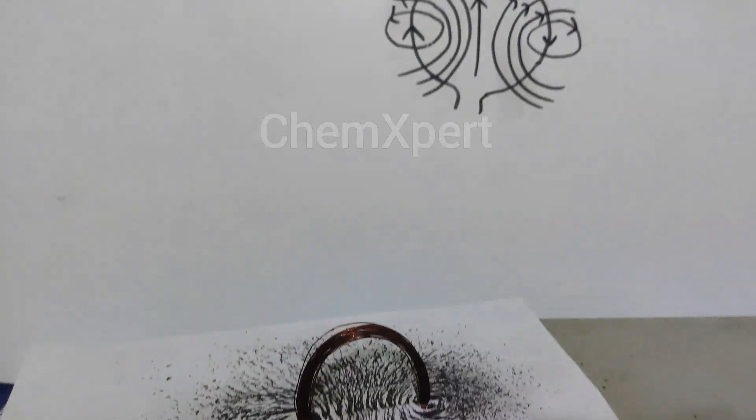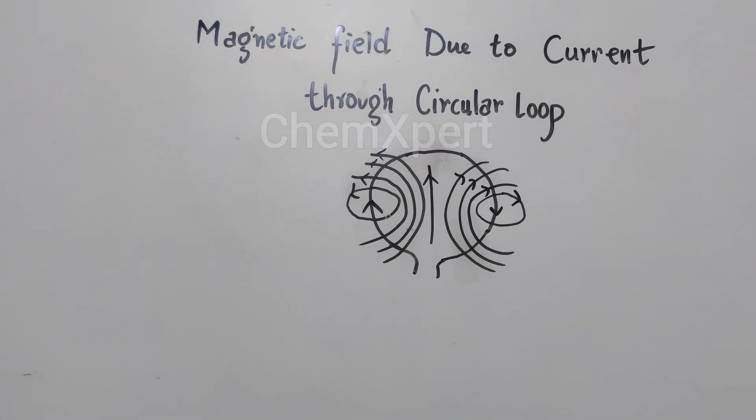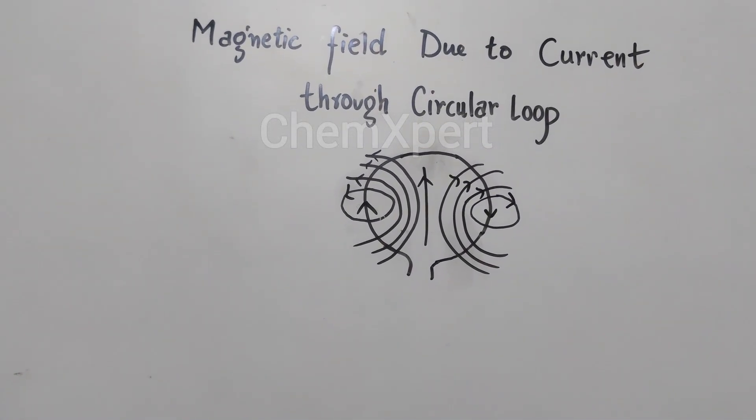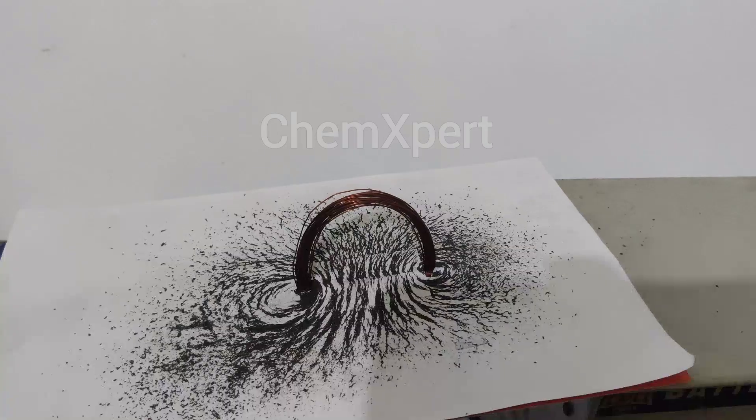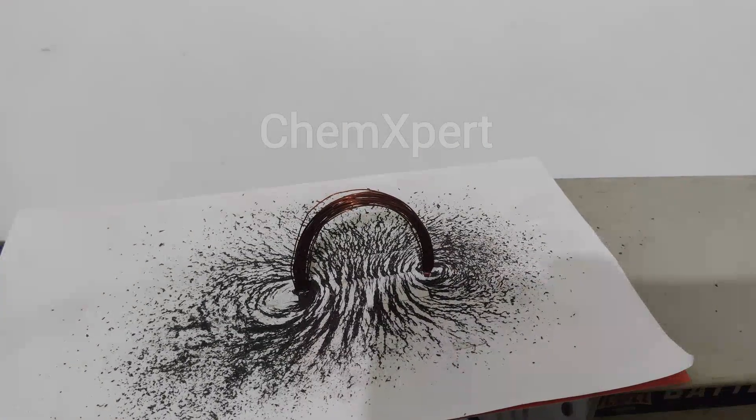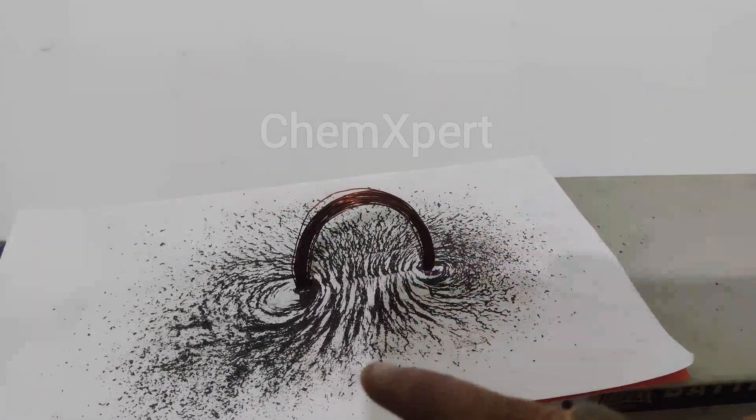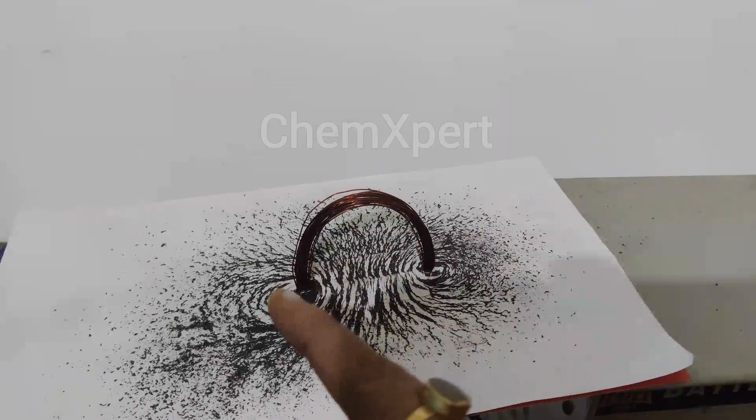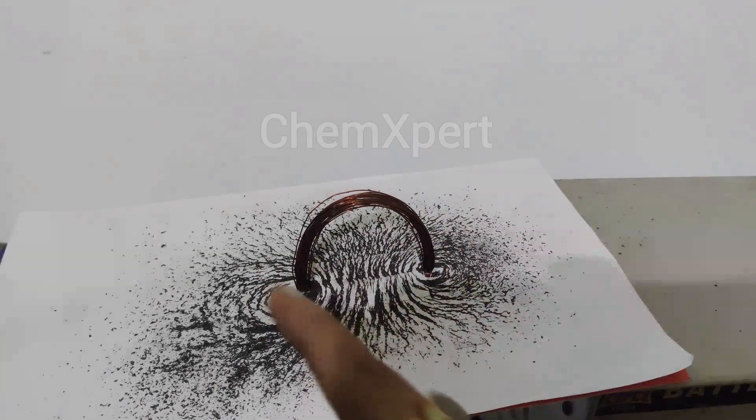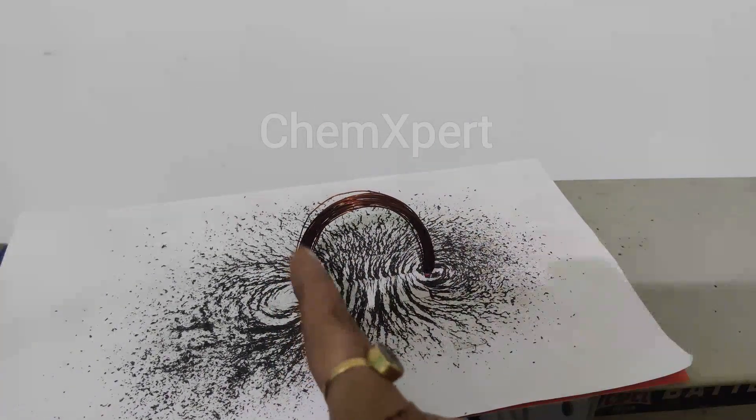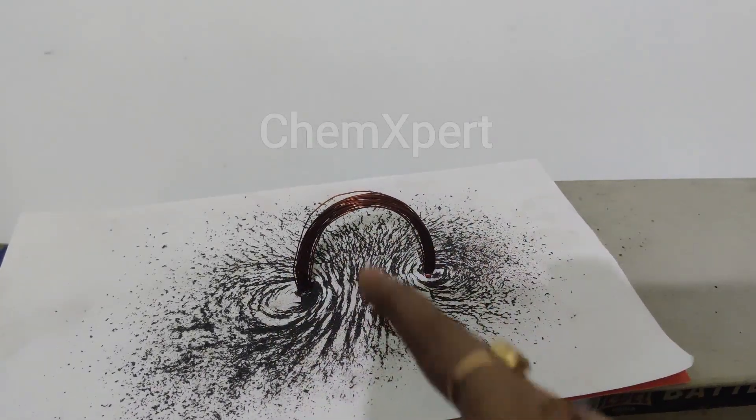So this is a very important question from the magnetic effect of electric current where you have to draw this diagram. The next important point is that you have to explain the right hand rule and explain the direction of the magnetic field at each point of the circular loop - at this arc, at this arc, and in the center.